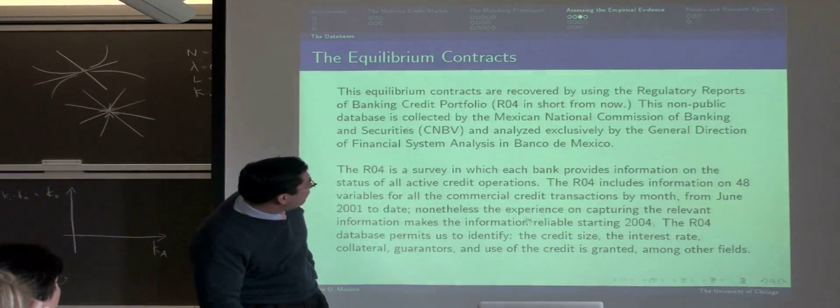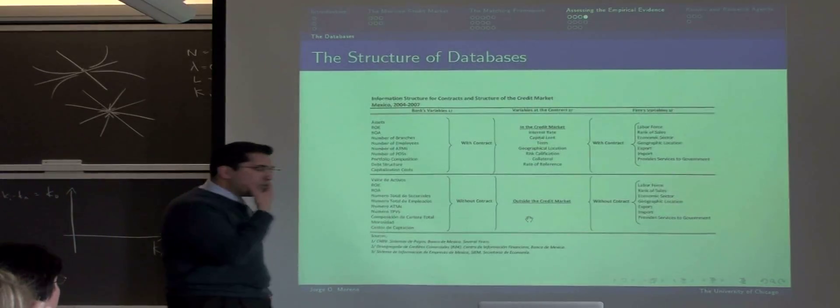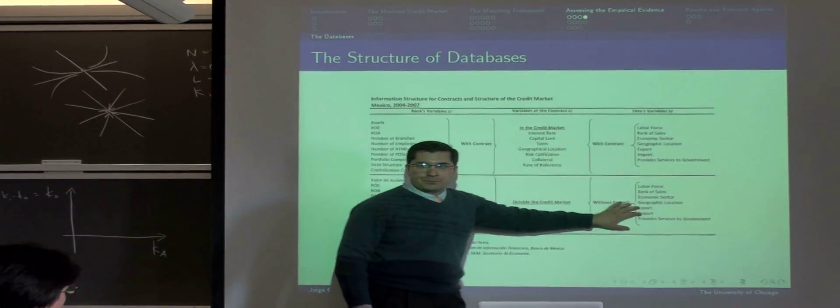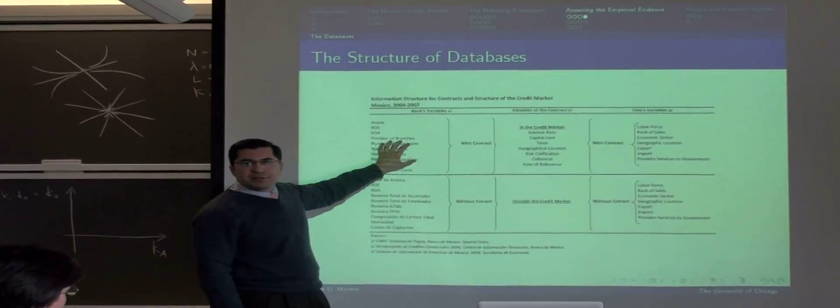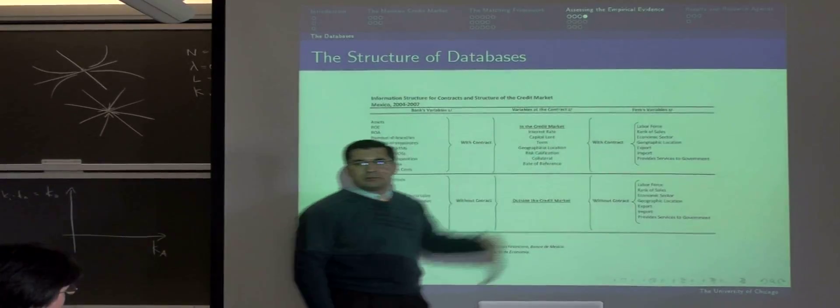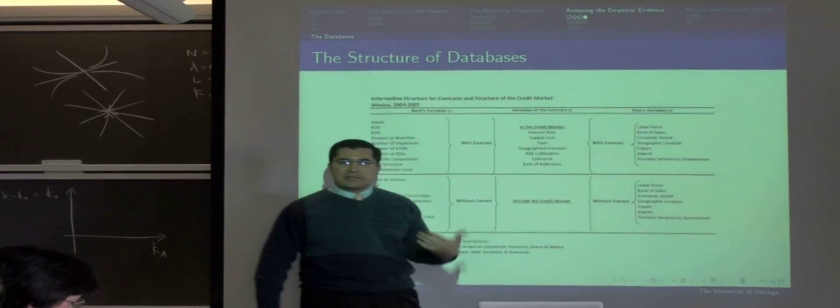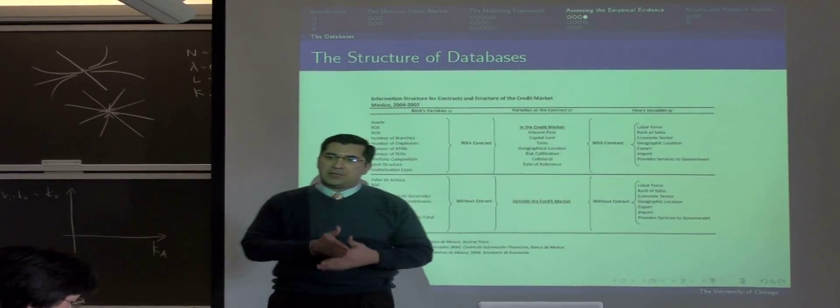The structure of the databases allow us to do this kind of exercise. We have the extensive margin of firms and the intensive margin of credit for firms and banks in terms of the number of transactions, as David said, and the interest rate and the capital at the credit transaction.